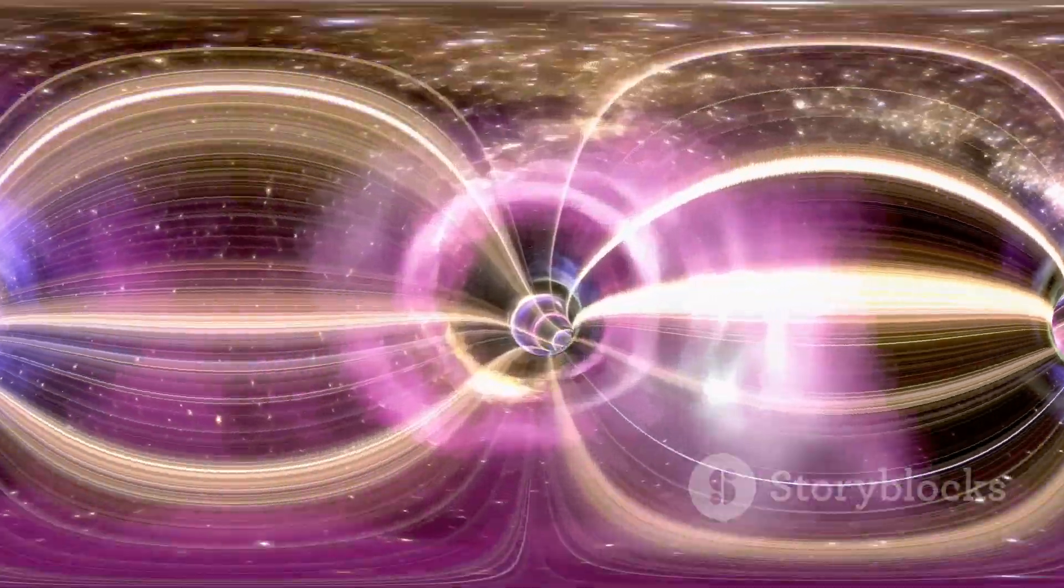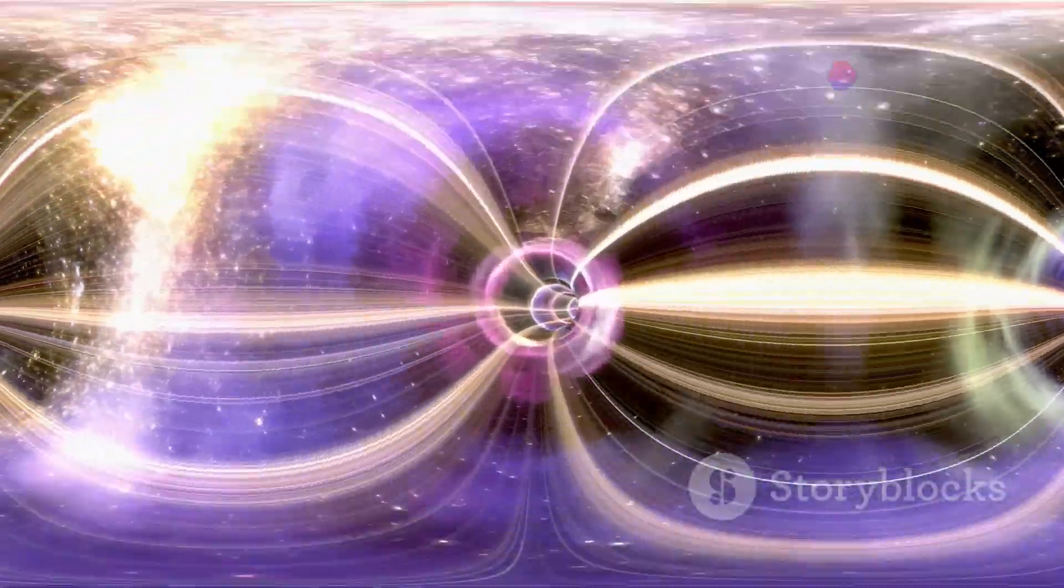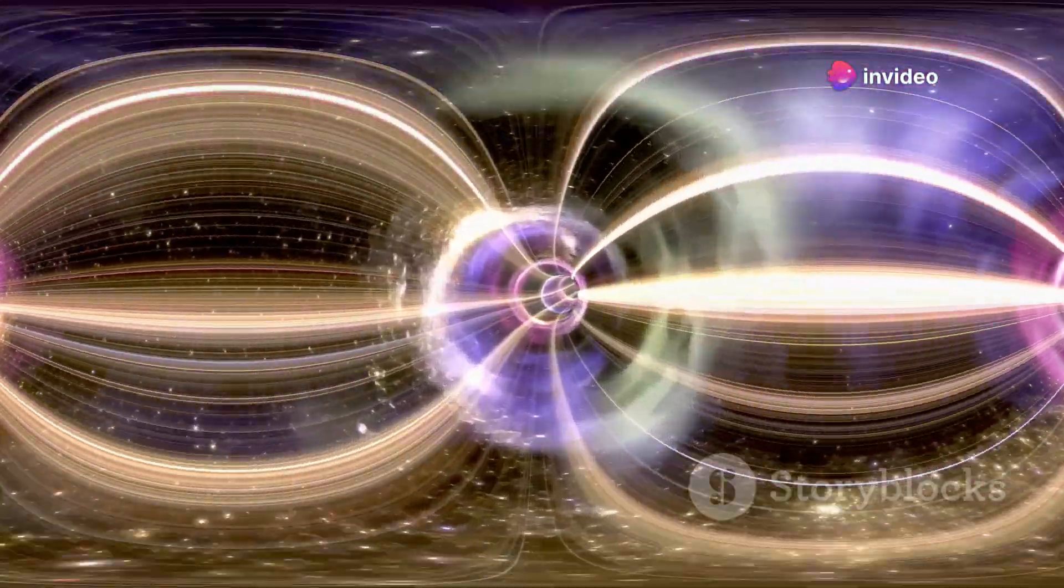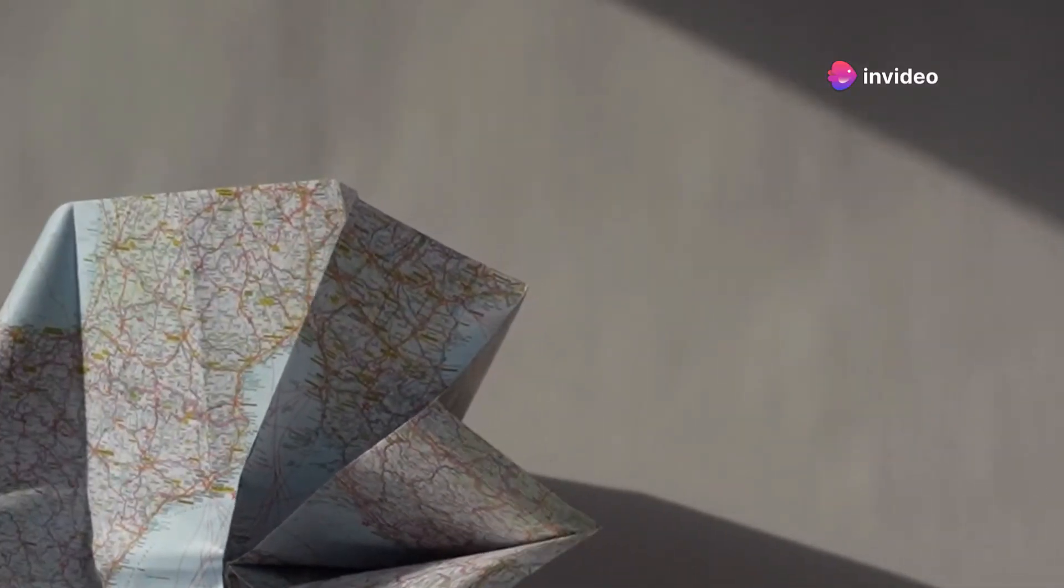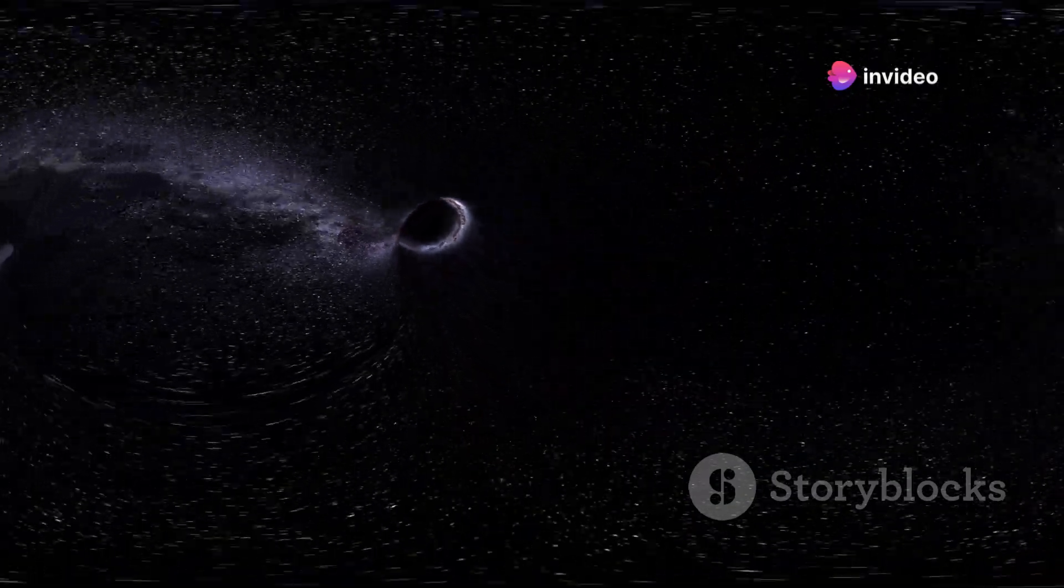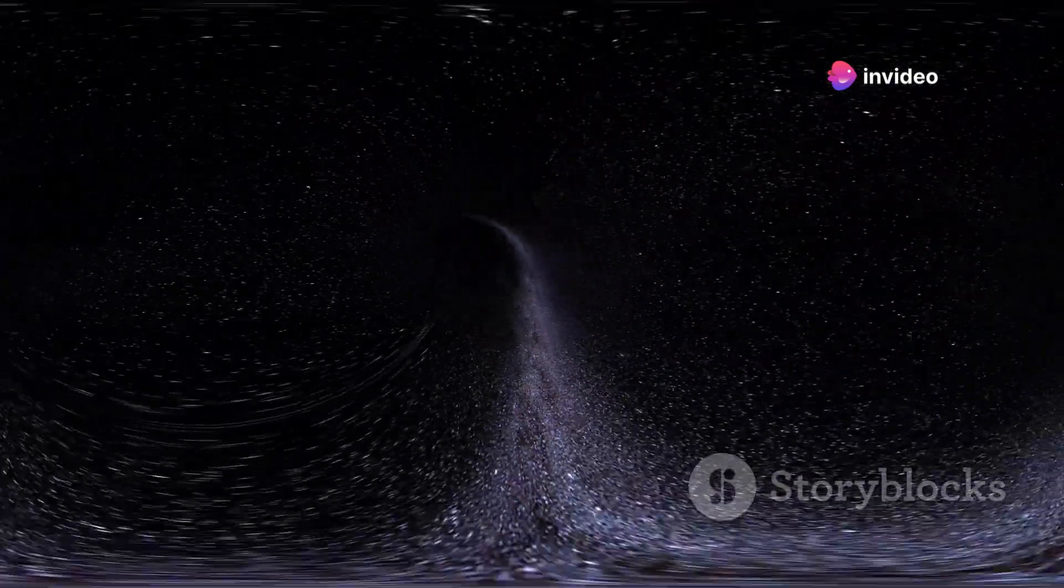Imagine a piece of paper representing the fabric of space-time. This paper is a two-dimensional analogy for our three-dimensional universe, where every point on the paper corresponds to a point in space. Now, fold the paper in half so that two distant points touch. This folding represents the warping of space-time, a concept predicted by Einstein's theory of general relativity. A wormhole, in its simplest form, is like a tunnel through this folded paper, connecting those two points.